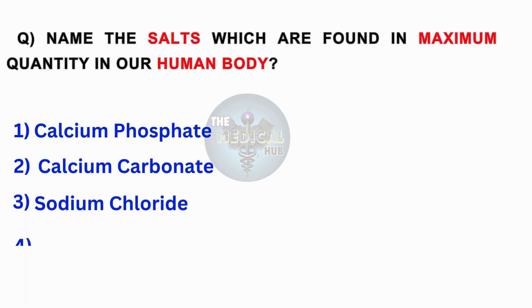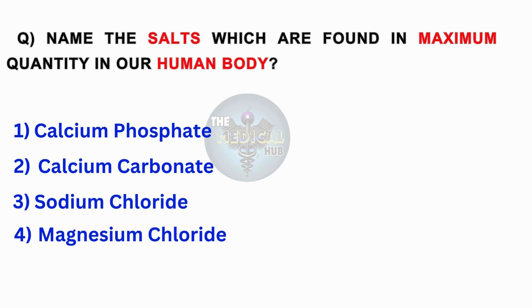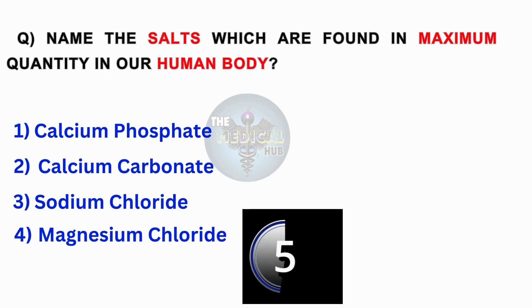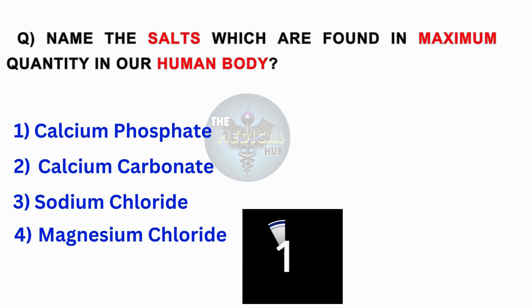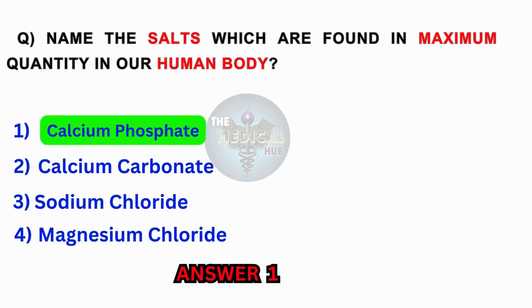Name the salts which are found in maximum quantity in the human body. Calcium phosphate, calcium carbonate, sodium chloride, magnesium chloride. Answer 1: Calcium phosphate.